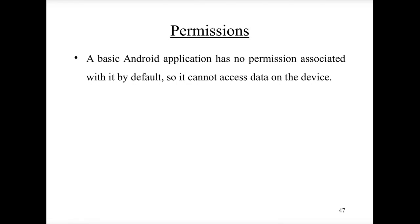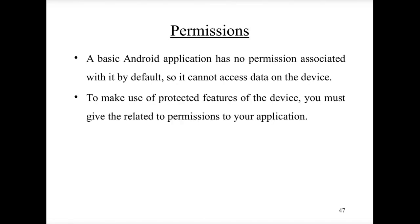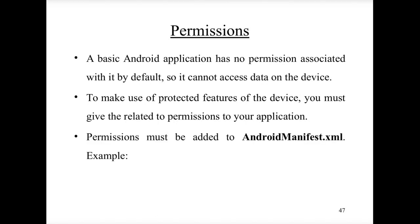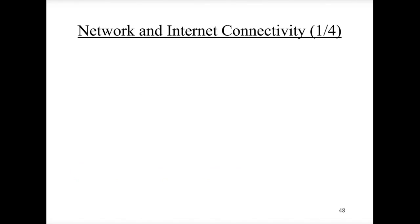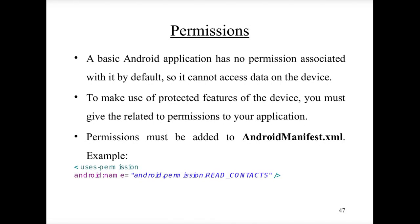Any Android application requires permissions granted by the user to access different mobile features. By default, an application has no permissions and cannot access data on the device. Permissions must be declared in the manifest file. For example, you can request READ_CONTACTS, ACCESS_NETWORK_STATE, ACCESS_FINE_LOCATION, or storage permissions — each must be listed in the manifest and granted by the user.